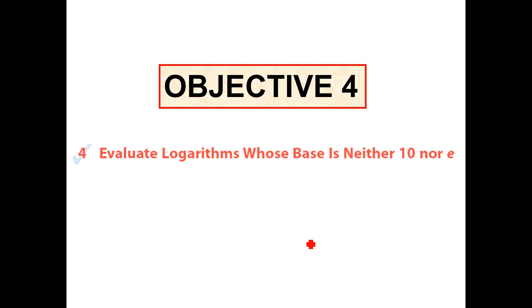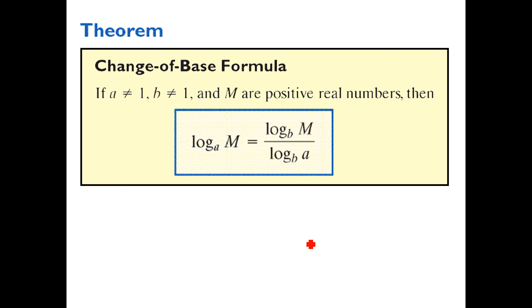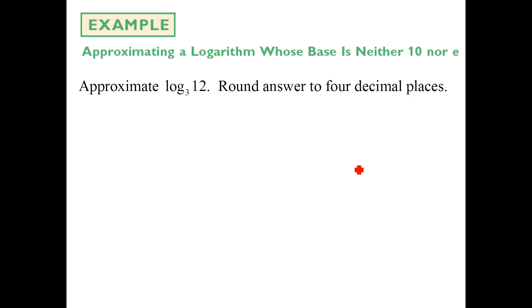Let's bring this home. Objective 4, evaluate logarithms whose base is neither 10 nor e. We've got the change of base formula. We've done this before. Here it is again. Let's use it. Log base 3 of 12 is going to be log base 10 of 12 over log base 10 of 3. Or you can use natural log of 12 over natural log of 3. You'll get the exact same answer no matter what. So we could go ahead and plug that into our calculator. Go ahead and do that. Make sure you go to four decimal places.